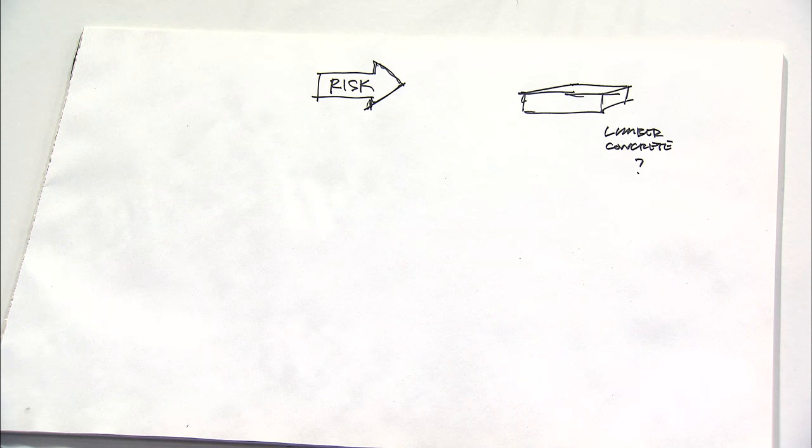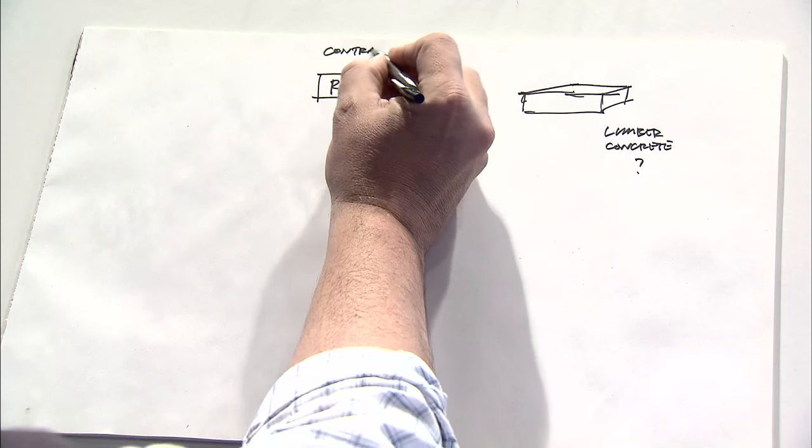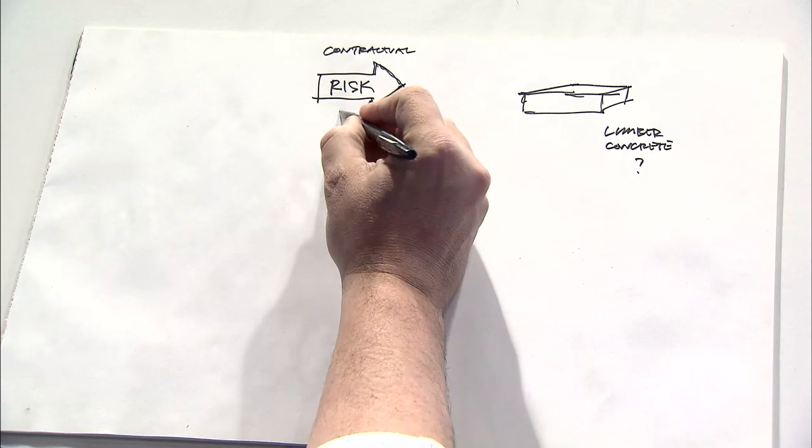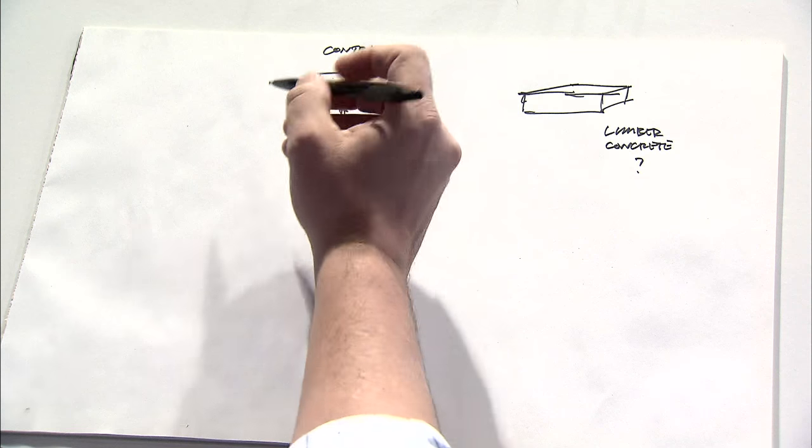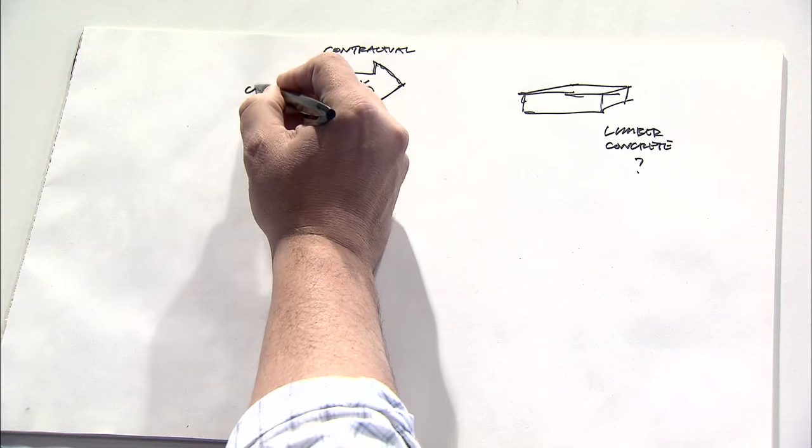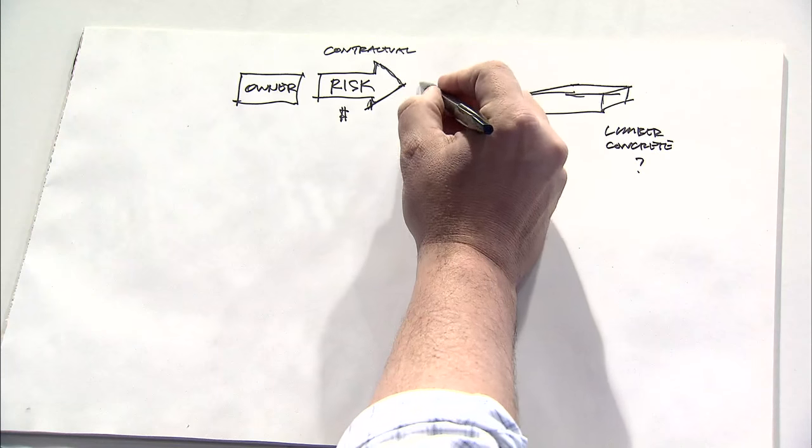But a lot of the risk that gets transferred in construction is contractual and is more of a function of money or cash flow or things on a much larger scale that happen associated with a project. And one of the most common transfers of risk is when the owner of a project seeks to transfer the risk of construction to a general contractor.